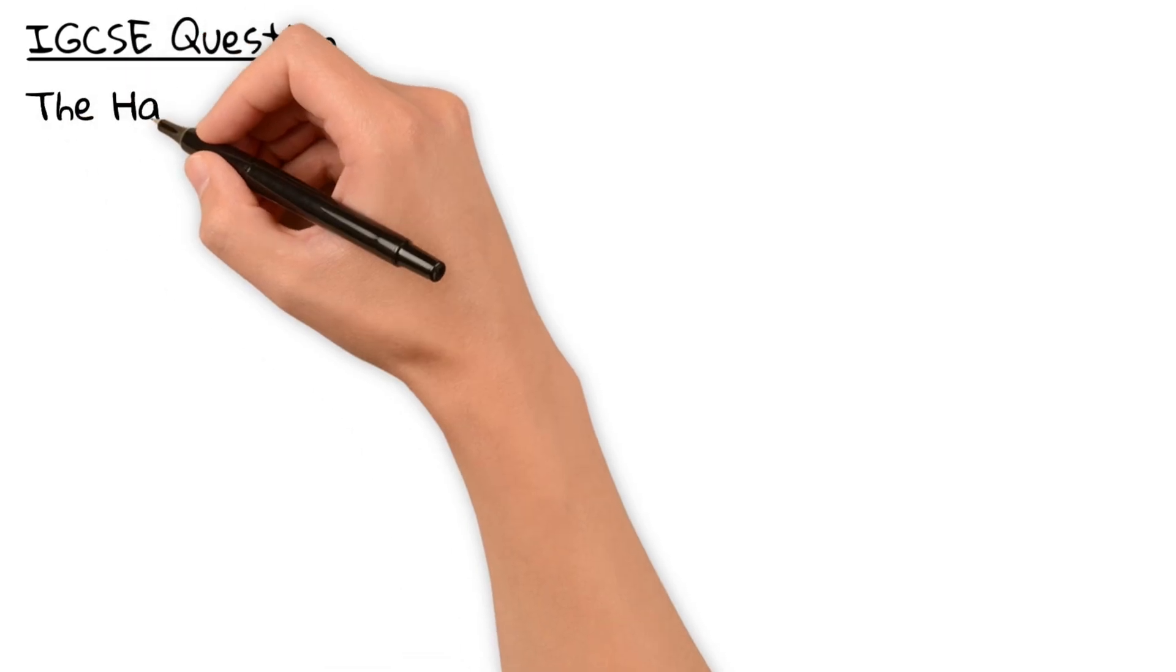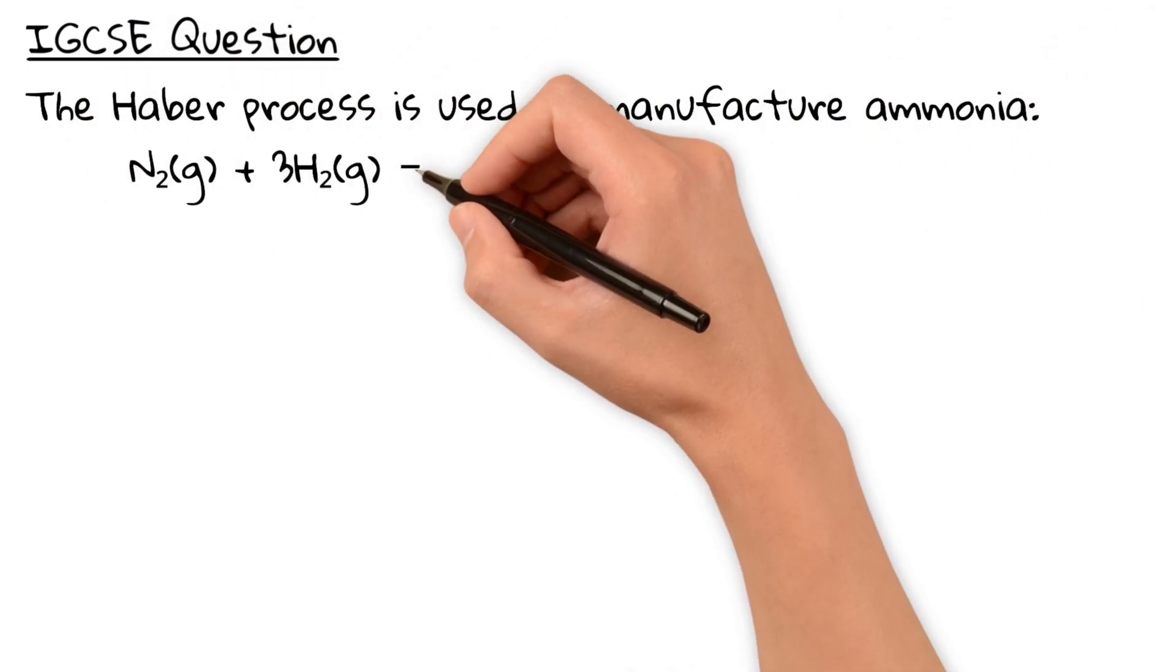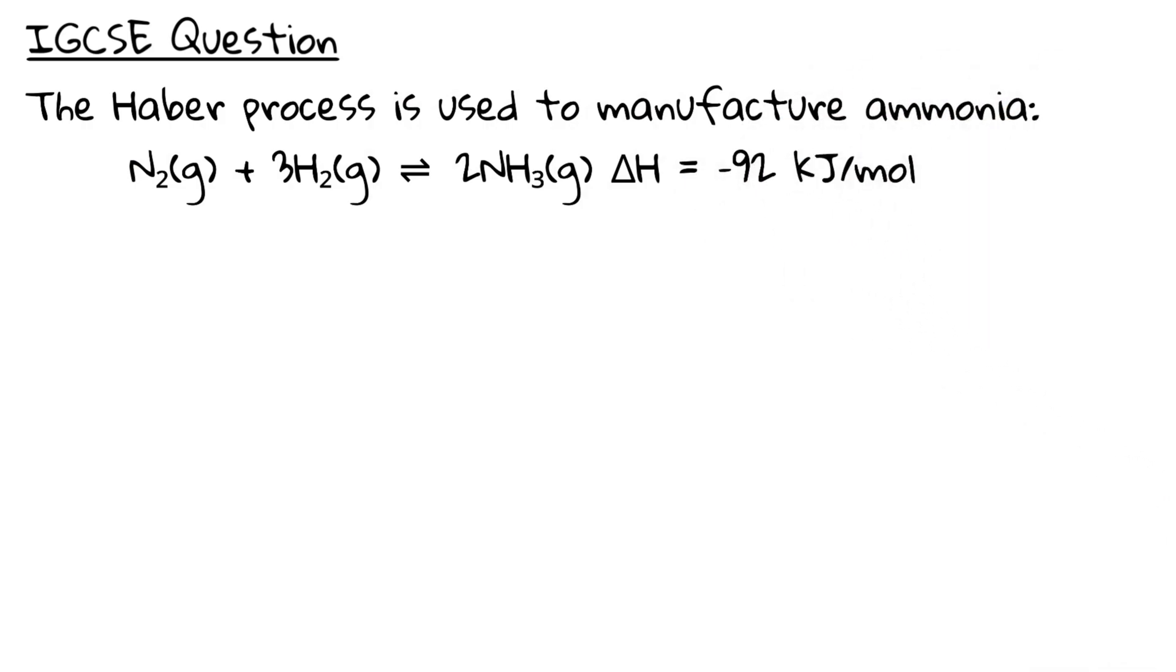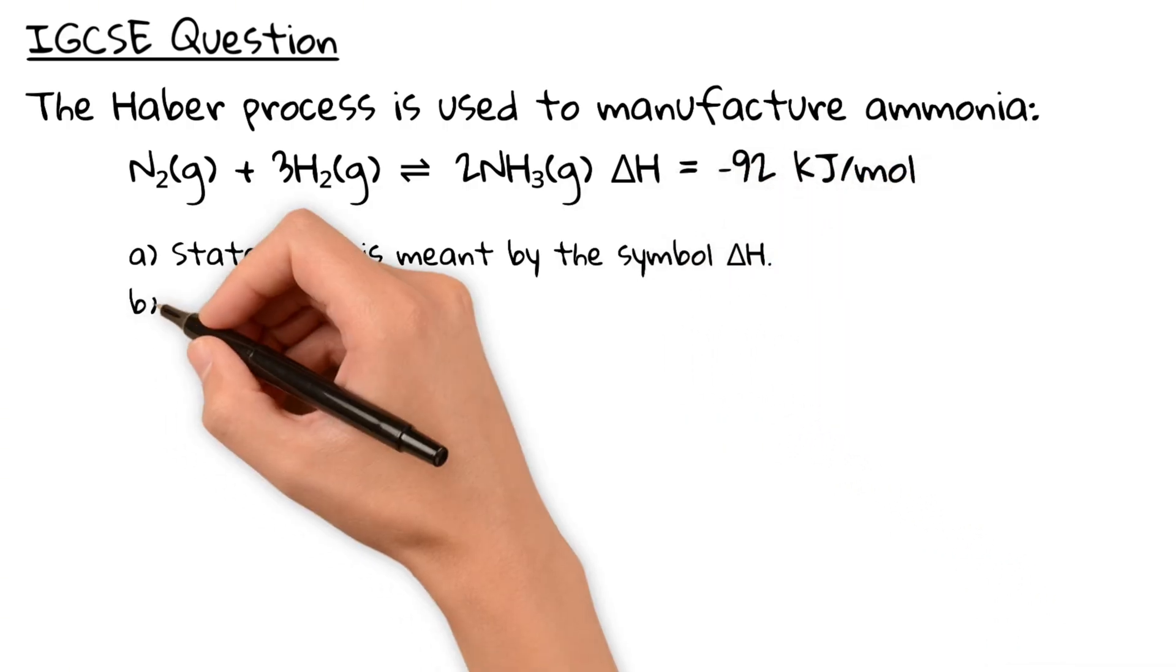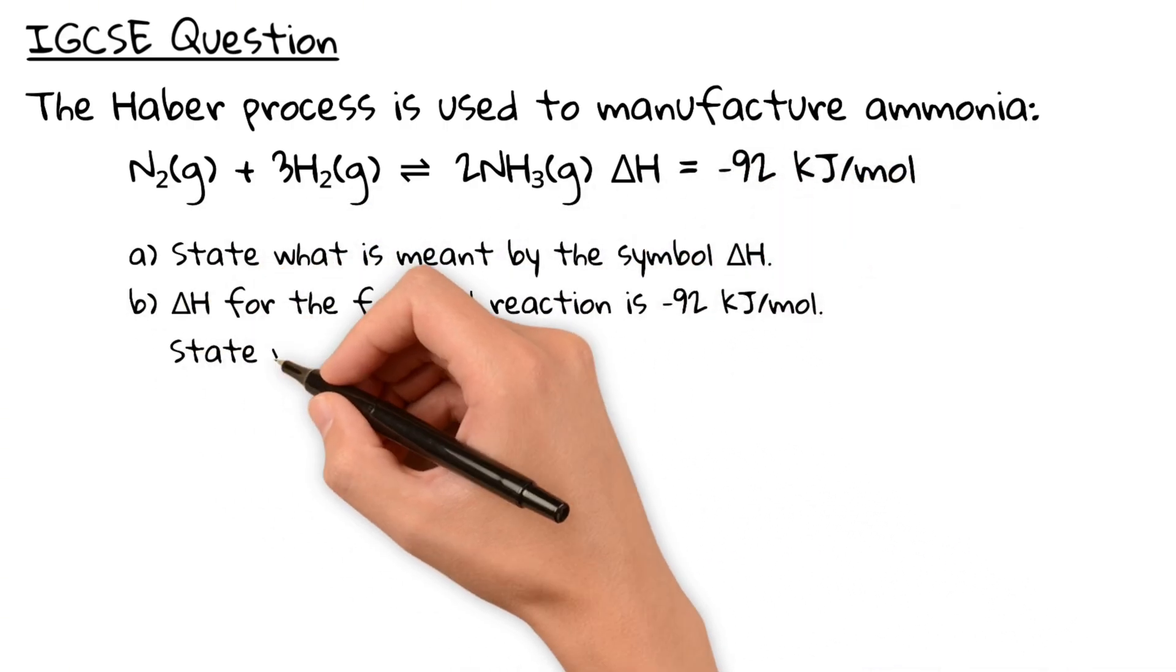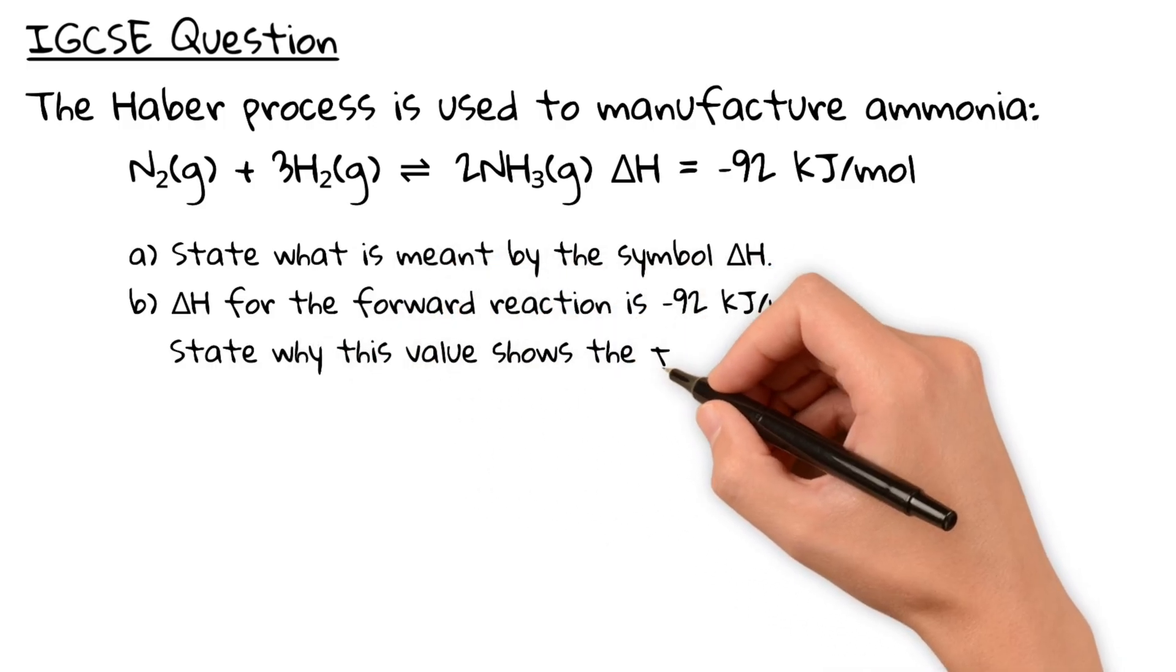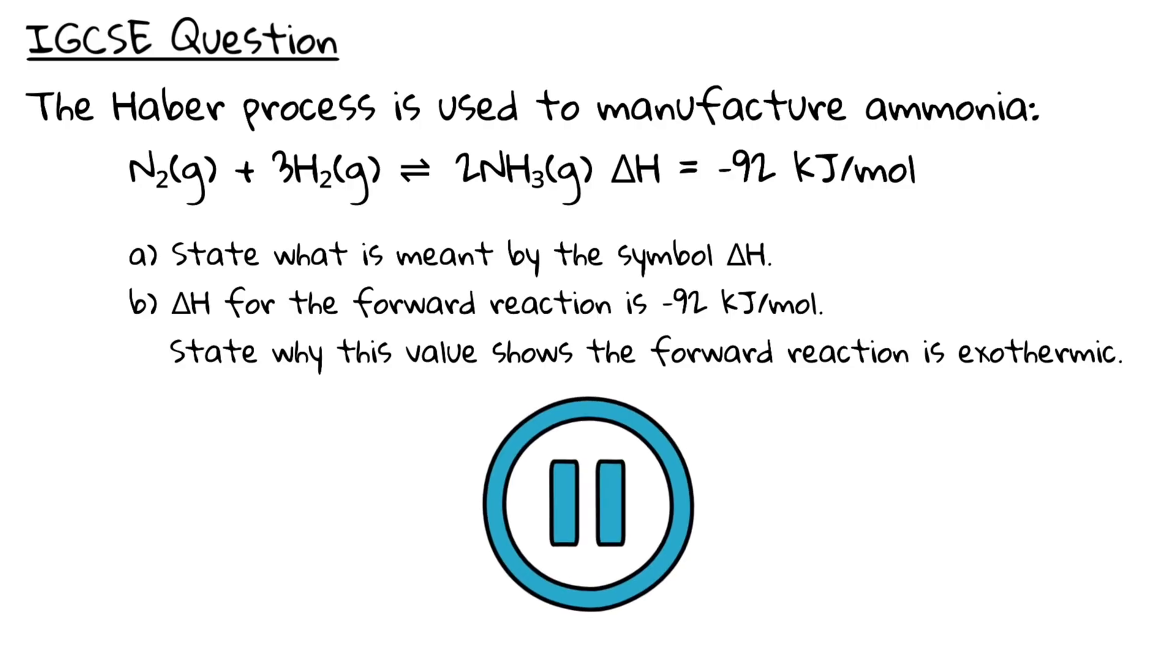Now let's test your understanding with an actual IGCSE-style question. The Haber process is used to manufacture ammonia. A. State what is meant by the symbol delta H. B. Delta H for the forward reaction is negative 92 kJ per mole. State why this value shows the forward reaction is exothermic. Pause the video and give it a try.